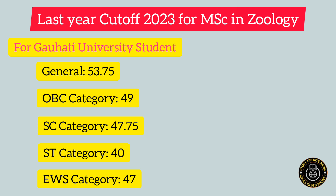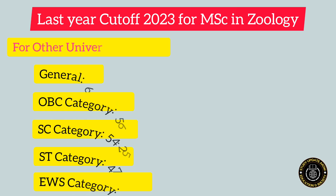The previous cutoff marks are: General category is 53.75, ABC category is 49, ST category is 47.75, SC category is 40, and EWS category is 47.